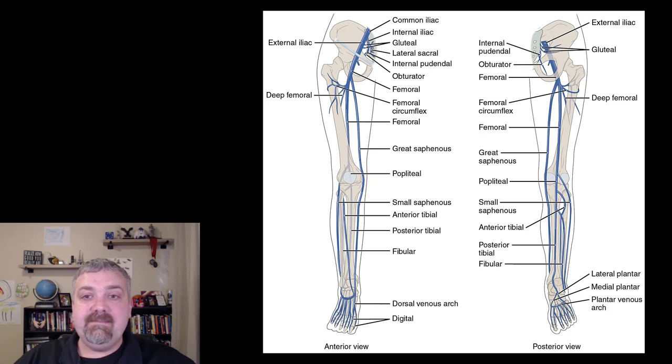Alright, here we see the lower extremity. So we have the common, internal, and external iliac veins again. Another new one, we have the great saphenous vein. This one's famous for being the longest vein in your body. So you can see the great saphenous there both on the anterior and posterior view. That's a very important new one again. Femoral vein, same place as the femoral artery. Popliteal, remember popliteus means behind the knee. So same thing there. And then we have the anterior and posterior tibial veins.